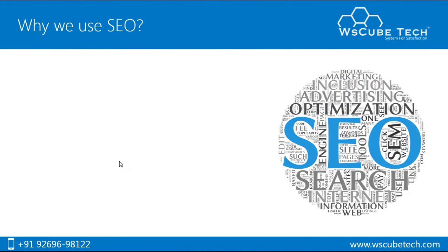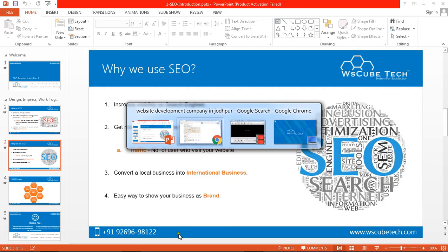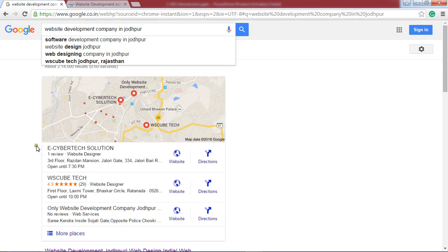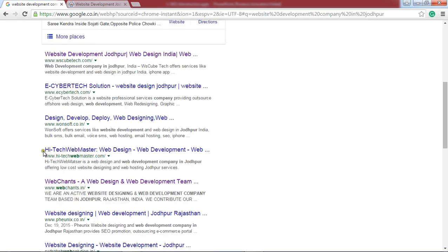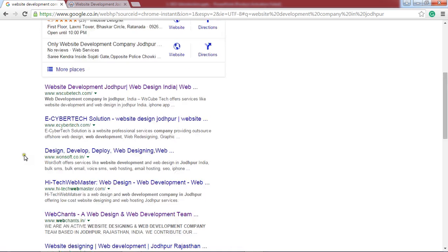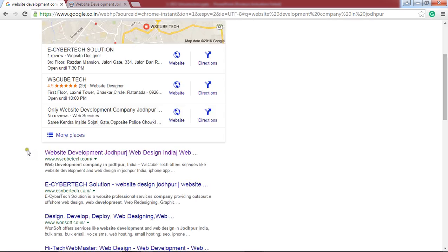Why do we use SEO? SEO is used so that you can get your product or business ranked higher on search engines like Google, Yahoo and Bing. Another reason is to increase visibility on search engines. When I searched 'website development company in Jodhpur,' Google showed this result because these websites are placing good content and good keywords related to their product, bringing them into the radar of search engines and making them come on top.